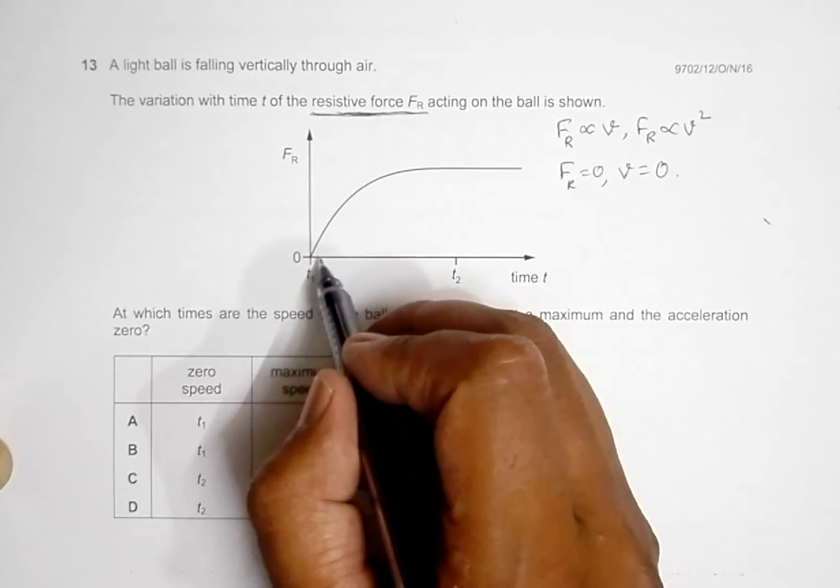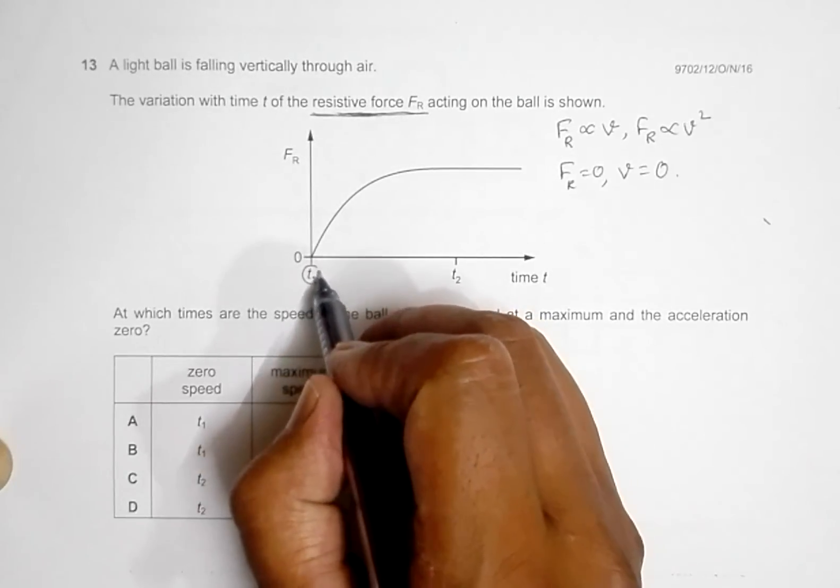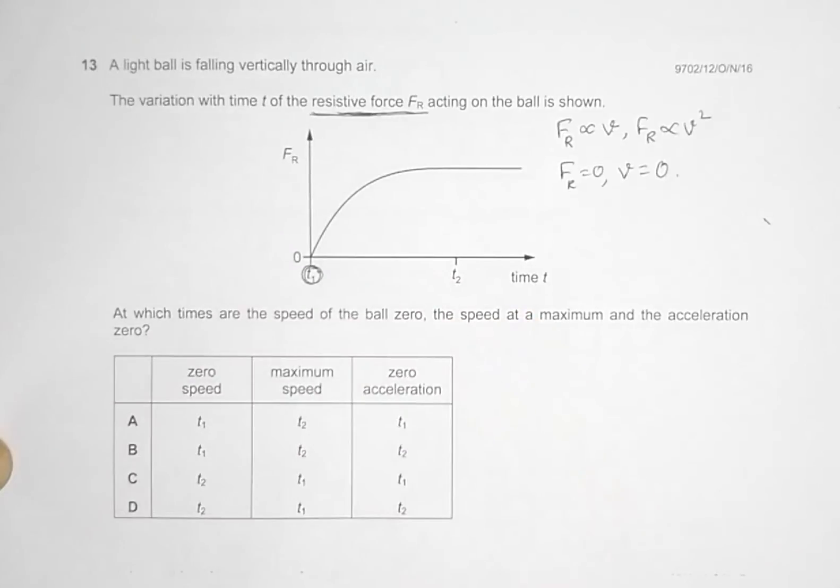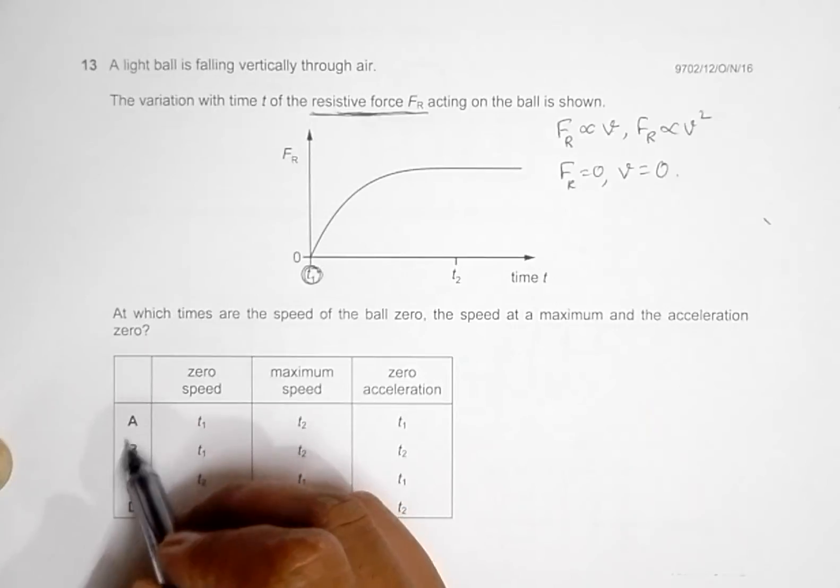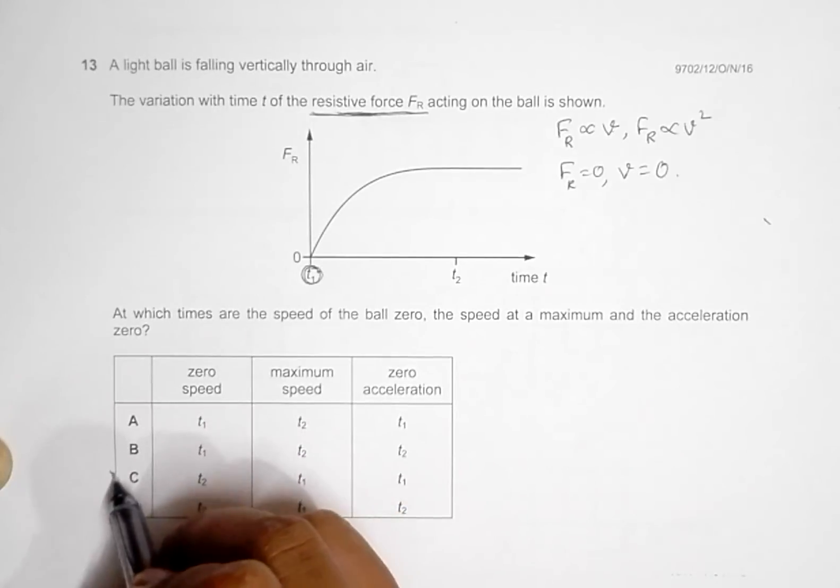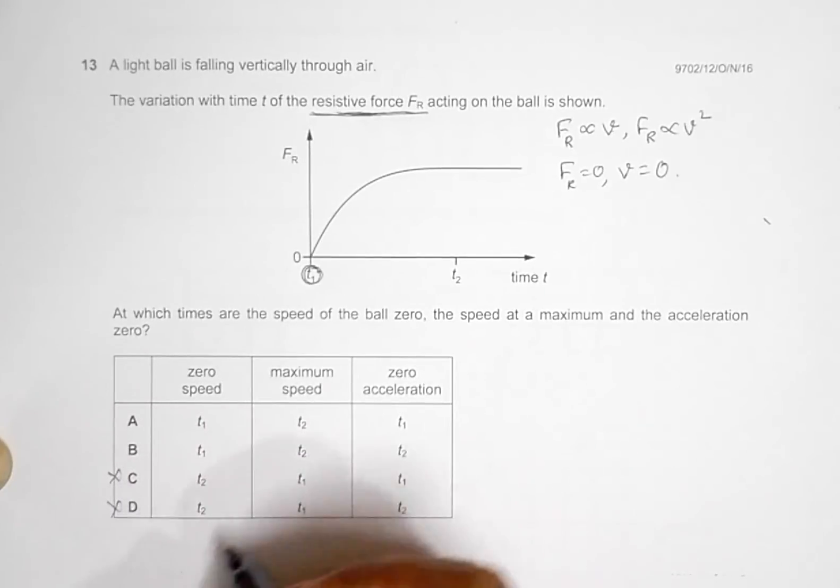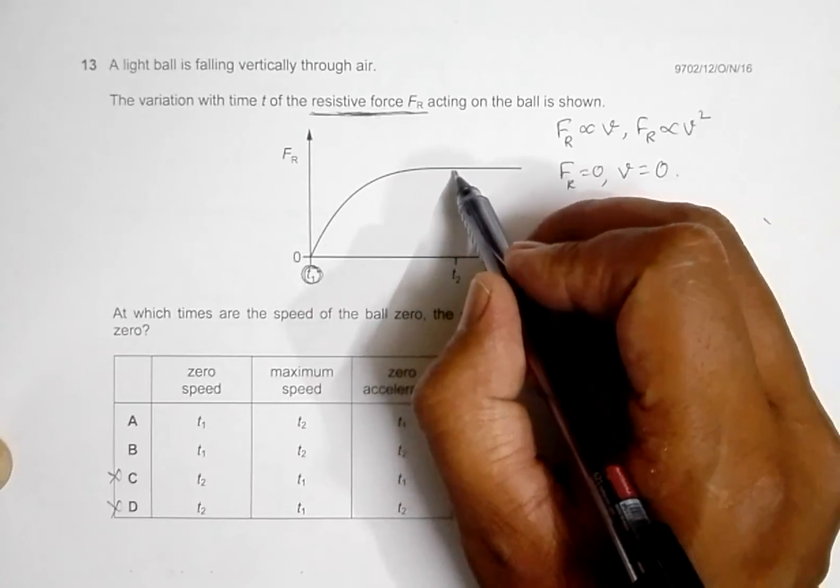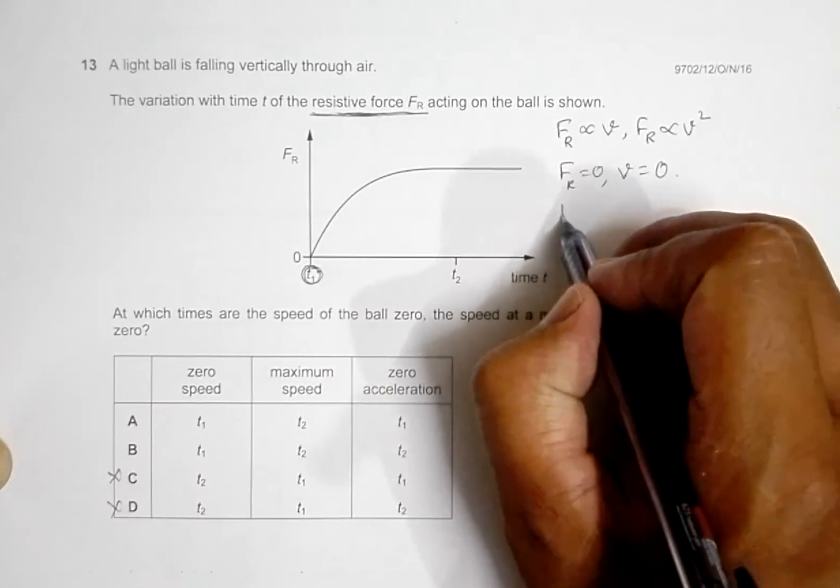At t1, the speed or velocity should be zero. So this is available in choices A and B. Choice A and B. So choice C and D goes. Then at t2, FR is already constant.